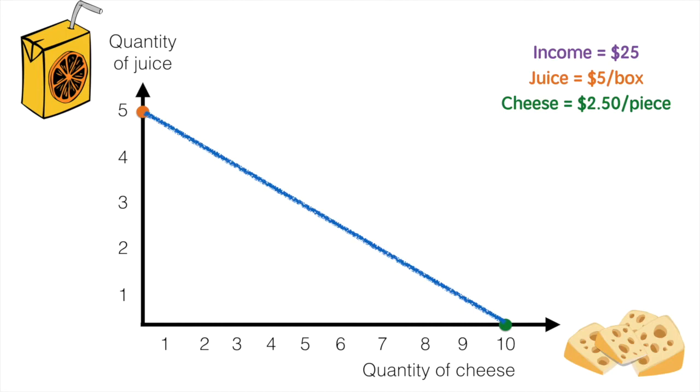Assuming a budget of $25 with juice boxes costing $5 each and a piece of cheese costing $2.50 each, with that budget constraint you can buy 5 boxes of juice or 10 pieces of cheese. As we bring in our three indifference curves,